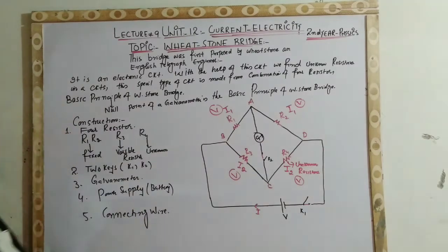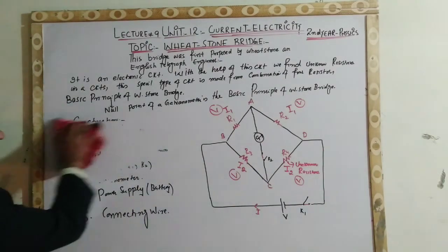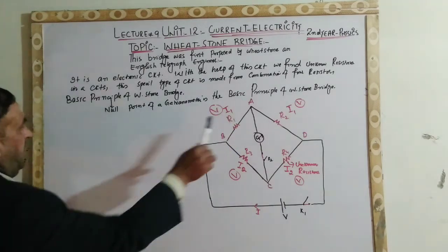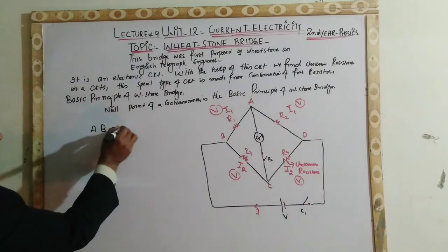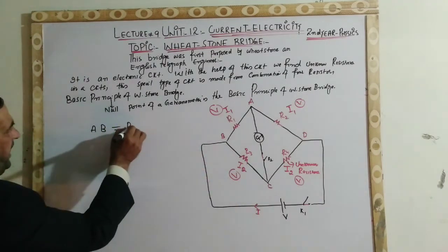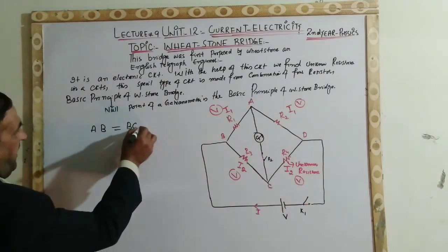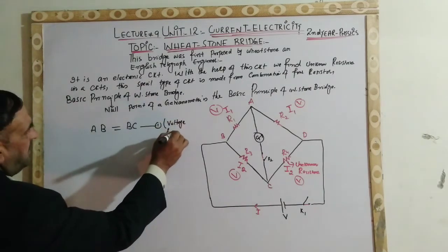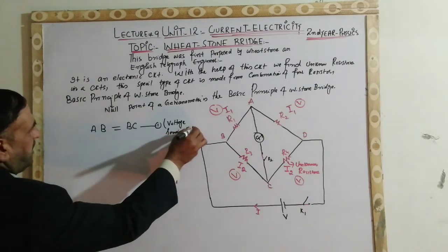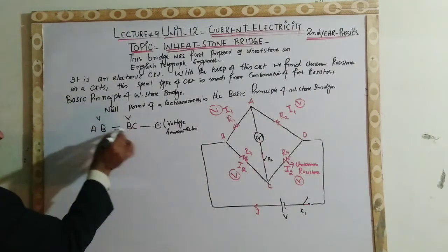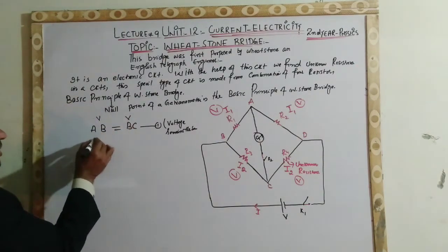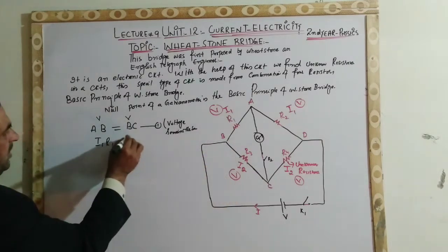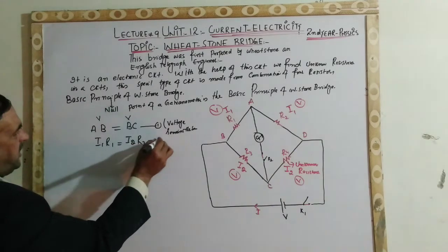Yahaan pe hum mathematics kartay hain. Diagram mein dekhen: AB is equal to BC — AB aur BC parallel mein hain, to voltage same rehta hai. Ohm's law ke according: V_AB = I1·R1 aur V_BC = I2·R3. Yeh equation number A hogaya. Similarly, AD is equal to DC — AD parallel with DC, voltage same hai — so V_AD = I1·R2 aur V_DC = I2·R4. Yeh equation number B hogaya.